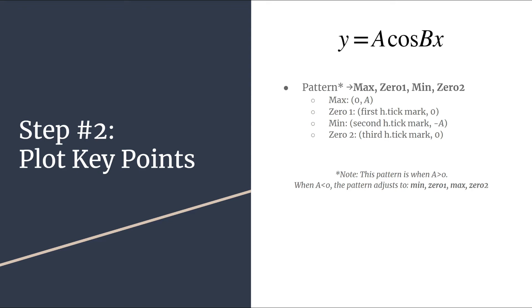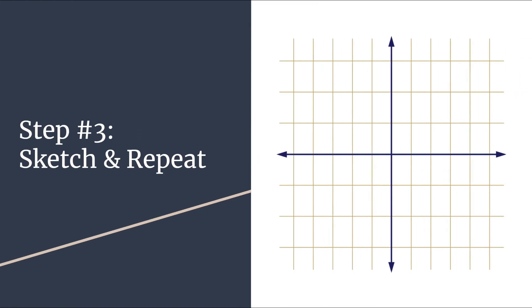So we've really done the hard work. We've analyzed the equation in step one. We figured out our key points in step two. Step three is all about making a sketch and then repeating the pattern. So we don't have a specific equation to graph here. It's just the general form Y equals A cosine BX, but I do think it would be helpful to see the pattern. So let's briefly label our axes with just some general expressions and we'll see what a cosine graph should look like.